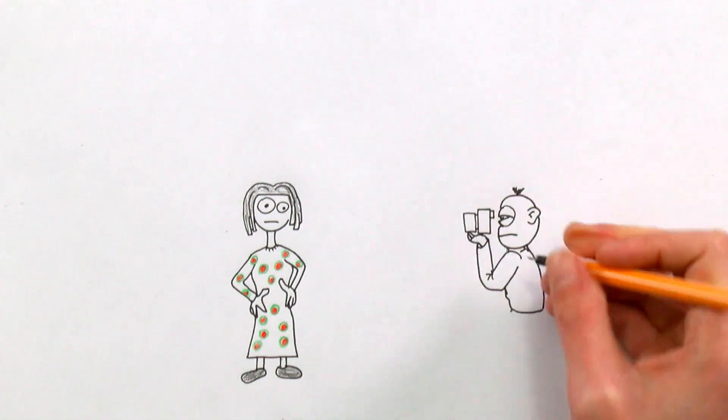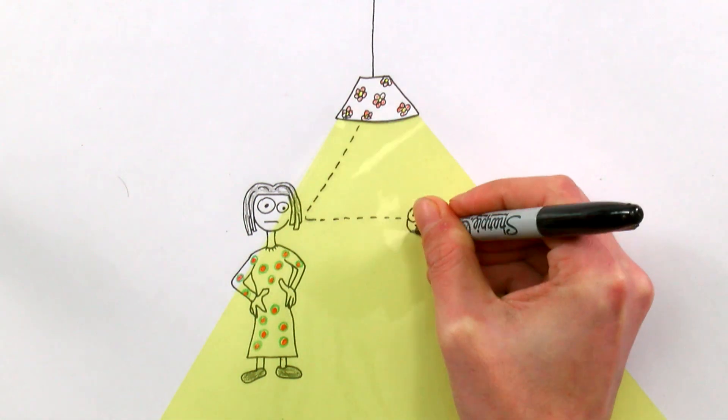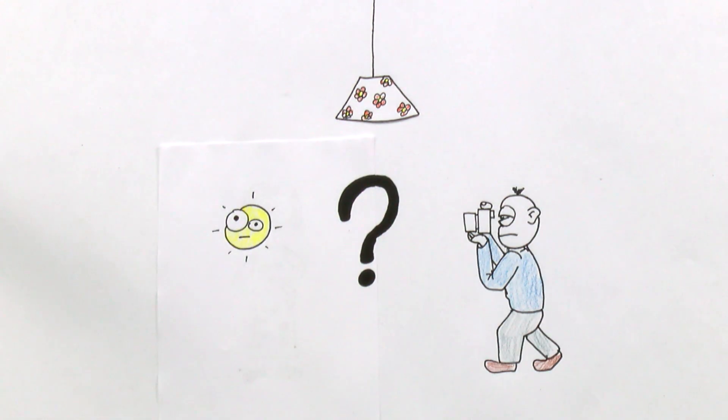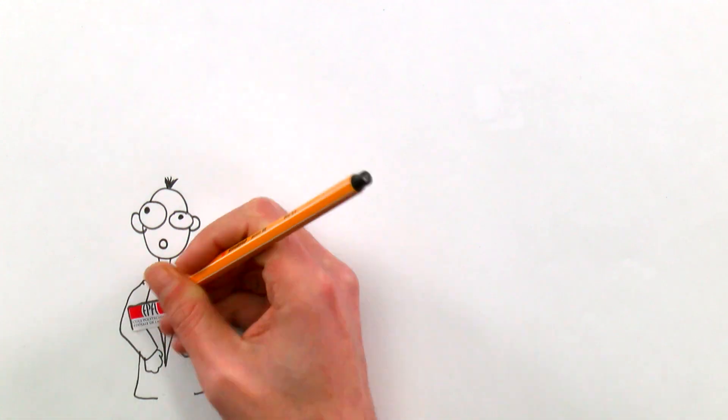Now, here's a question. You need light to take photos, right? But how do you take a photo of light itself? The EPFL researchers figured out a clever way to do it.